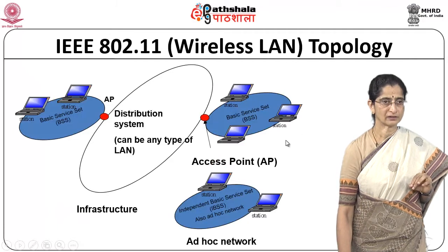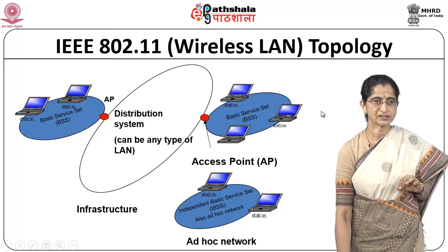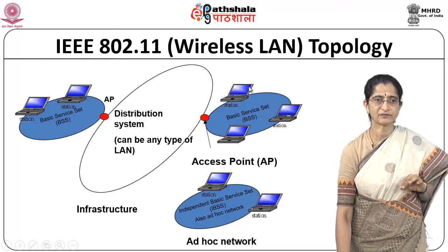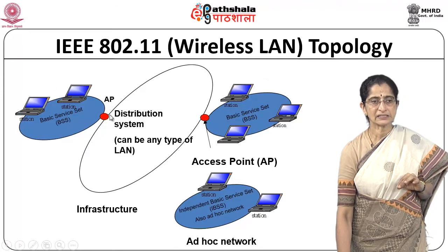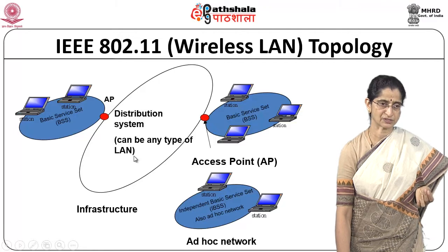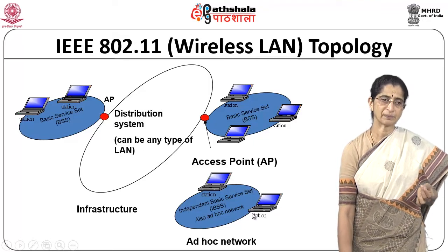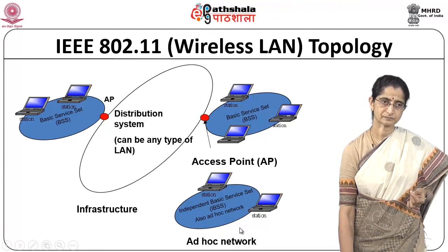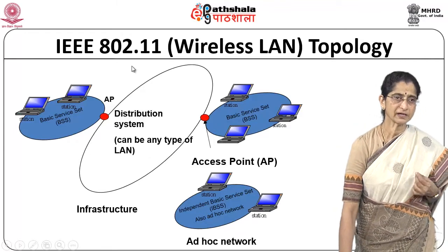The 802.11 wireless LAN topology consists of access points connected to mobile stations, forming a basic service set (BSS). Multiple BSSs are connected via a distribution system, which can be any type of LAN. An access point not connected to a distribution system forms an independent BSS — an ad hoc network. Thus 802.11 supports both infrastructure and ad hoc modes of operation.